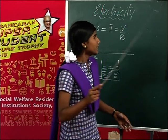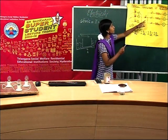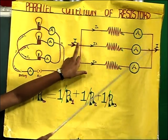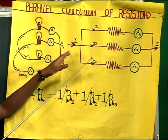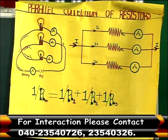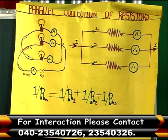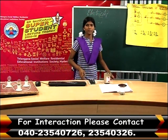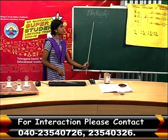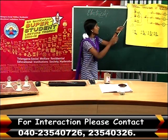In a parallel connection, resistors are inserted between two ends. The current will be different but the potential difference will be the same. So we have learned about Ohm's law. Depending upon Ohm's law, there are two connections — the first one is series connection.